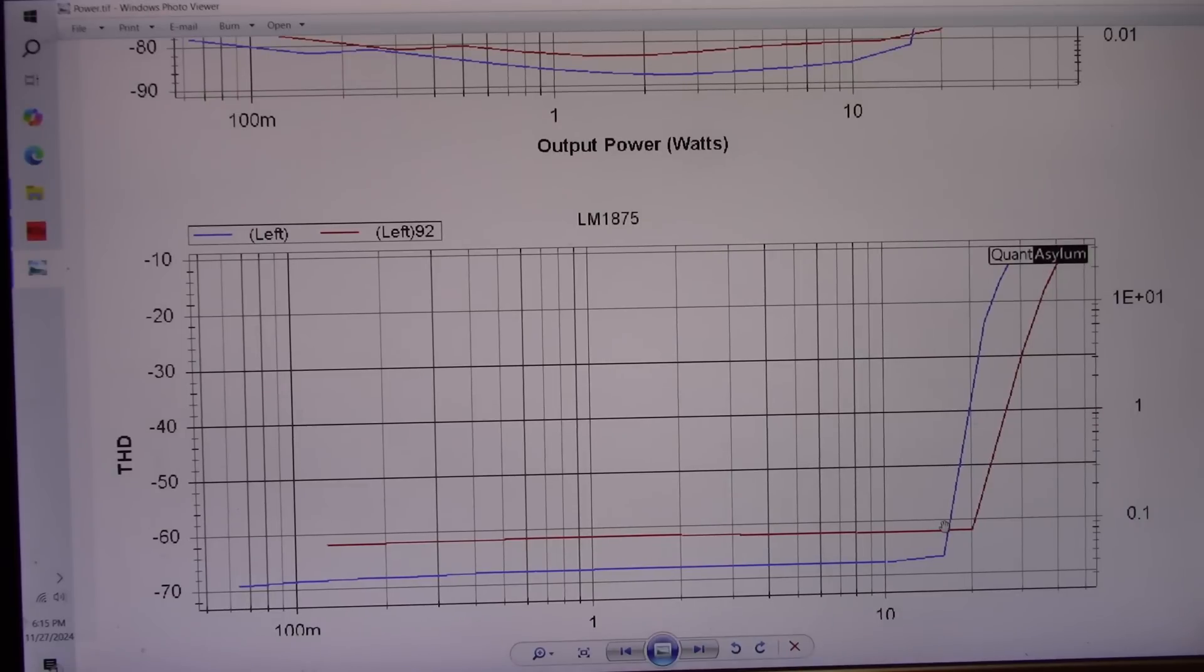And with the 4 ohm load, it's only a little over 20, maybe 20 and a half. And as you remember, the TDA was up around 31 watts. So what's happening? I think it's the current limiting capability.